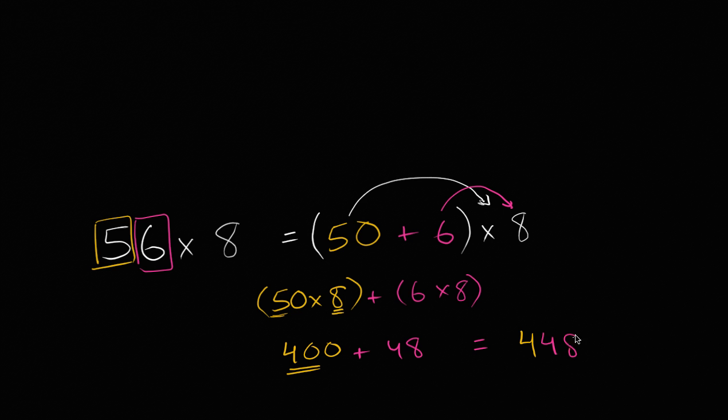And this is actually how I do things in my head. When I do it in my head, obviously, I'm not writing things down like this, but I think, 56 times 8, I could break that up into 50 and 6, and 8 times 50, that's 400, or 40 tens. 8 times 5 tens is going to be 40 tens, or 400, and then 8 times 6 is going to be 48, so it's going to be 400 plus 48. Once you get some practice, you're going to be able to do things like this in your head.